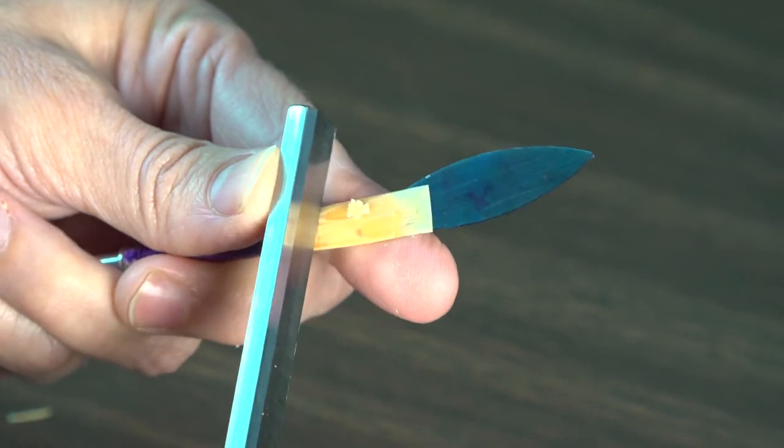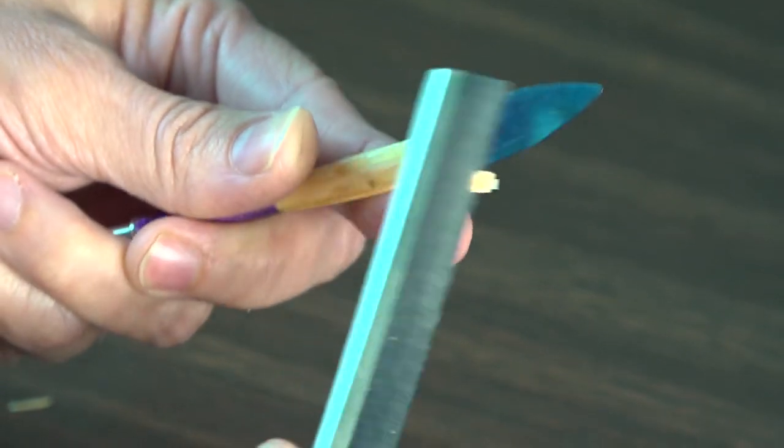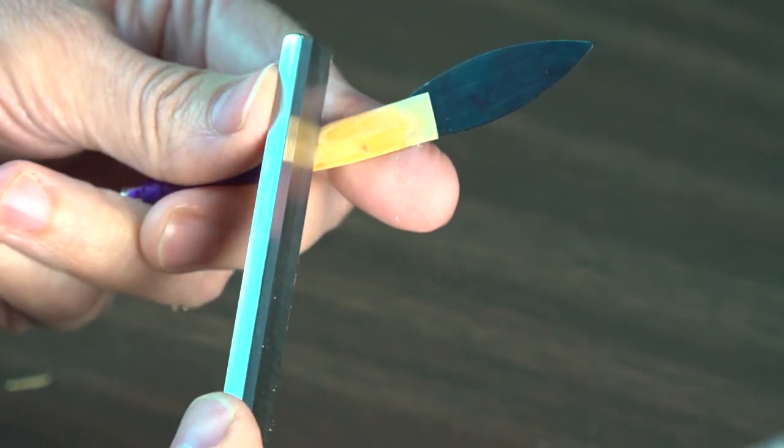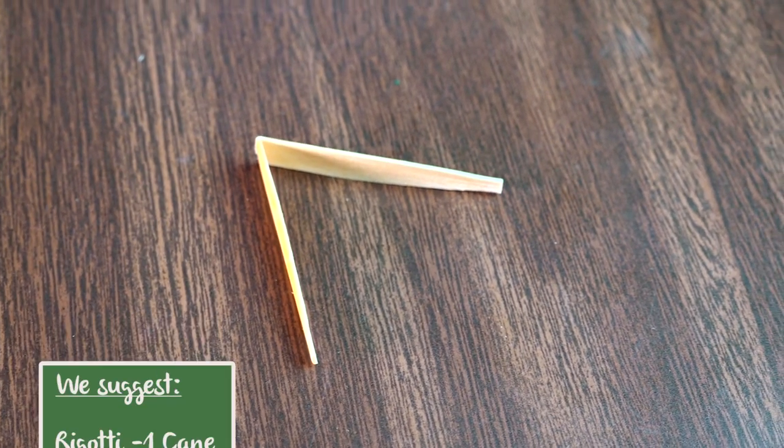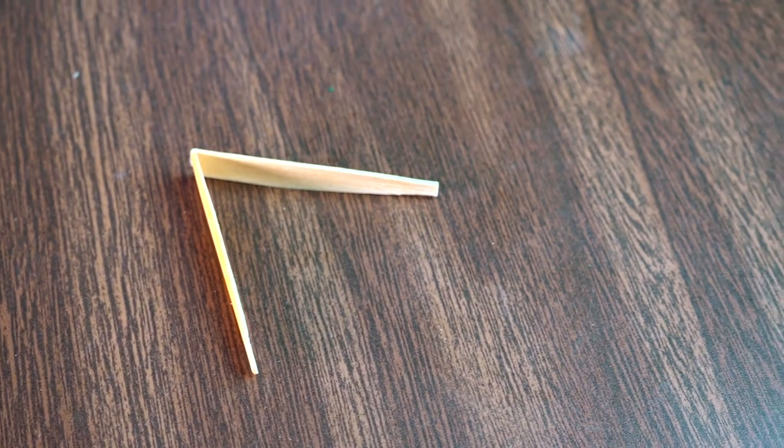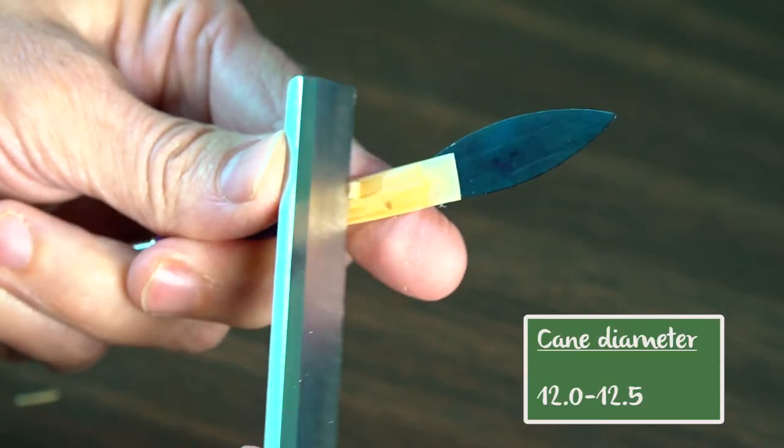If you're not sure what kind of cane or what shape of cane to get, start with a popular shape like Rigotti minus one shaped cane. If you are ordering cane and you have a choice of diameter, order 12.0 to 12.5.